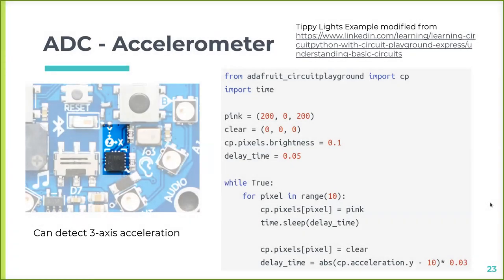Another ADC sensor is the accelerometer. This example I got from a LinkedIn Learning course that teaches CircuitPython with the Circuit Playground Express — if you have access, I recommend checking it out. This example is called 'Tippy Lights.' There's an accelerometer on the board and they label the axes for you — positive Y in one direction, X in another, and Z going out towards you. We change the speed at which the LEDs light up depending on the acceleration in the Y direction.